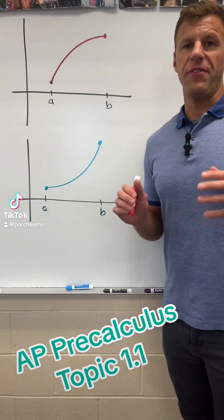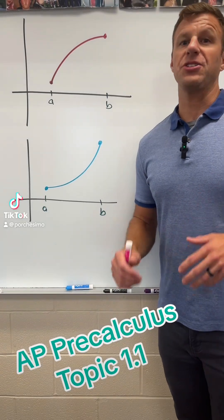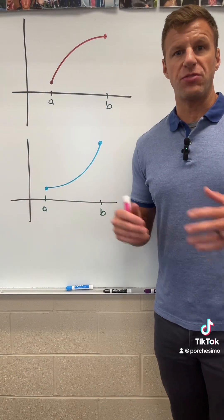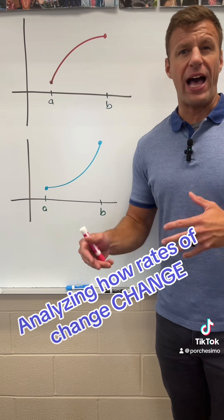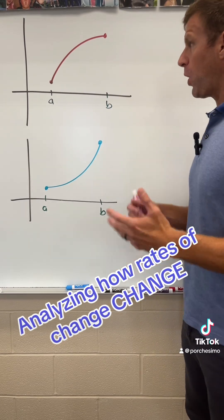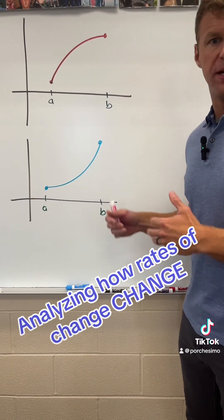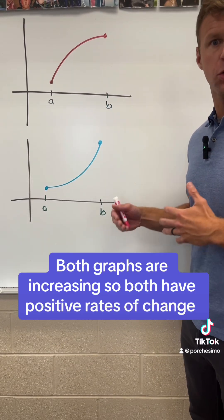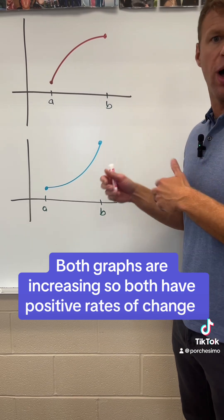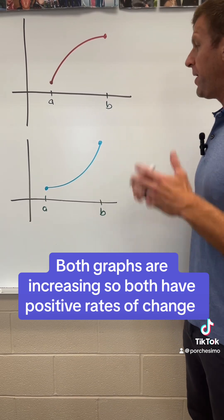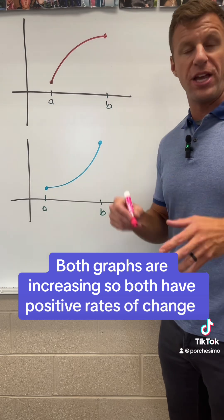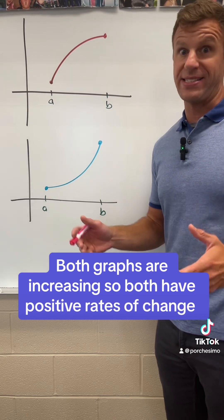In the first topic of AP Precalculus, it's really important to understand rates of change and how they change. Here we have two graphs that over the domain of A to B are increasing — as X goes up, so does Y. Inputs go up, outputs go up. That's true for both of them, but it's how they change that's different.